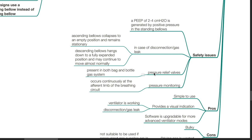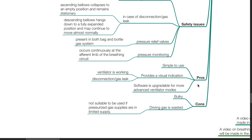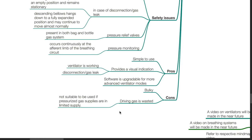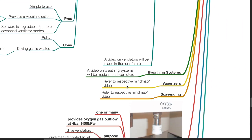Pressure relief valves are present in both bag and bottle gas systems. Pressure monitoring is present and occurs continuously at the efferent limb of the breathing circuit. Pros: it is simple to use, provides a visual indication that the ventilator is working, and disconnection or gas leak can be detected. Software is upgradable for more advanced ventilatory modes. Cons: it is bulky and driving gas is wasted. Hence it is not suitable when pressurized gas supplies are in limited supply. A video on ventilators will be made in the near future for other types of ventilators.